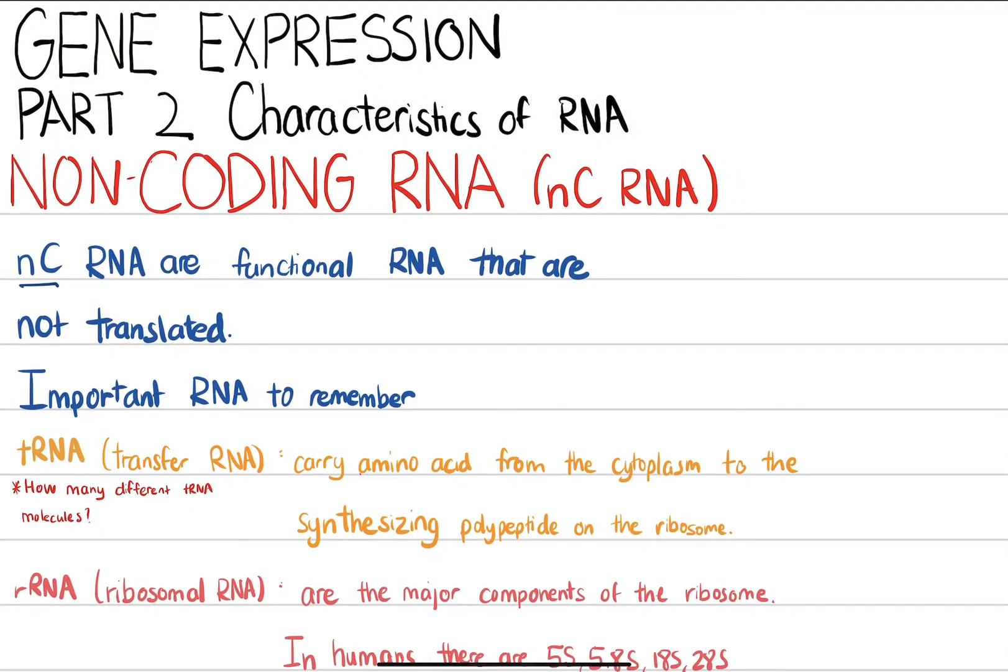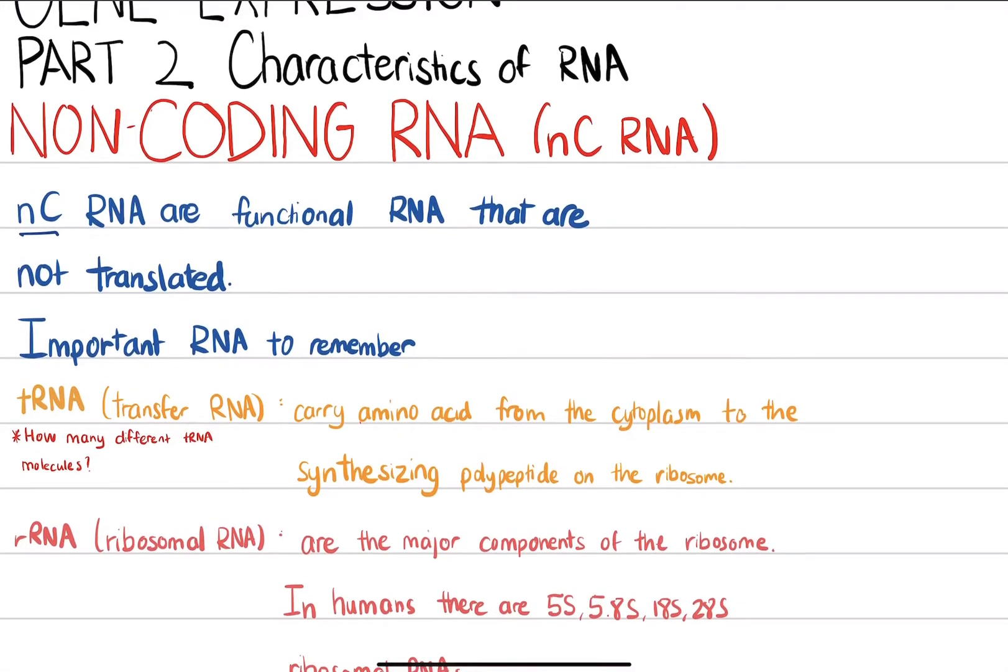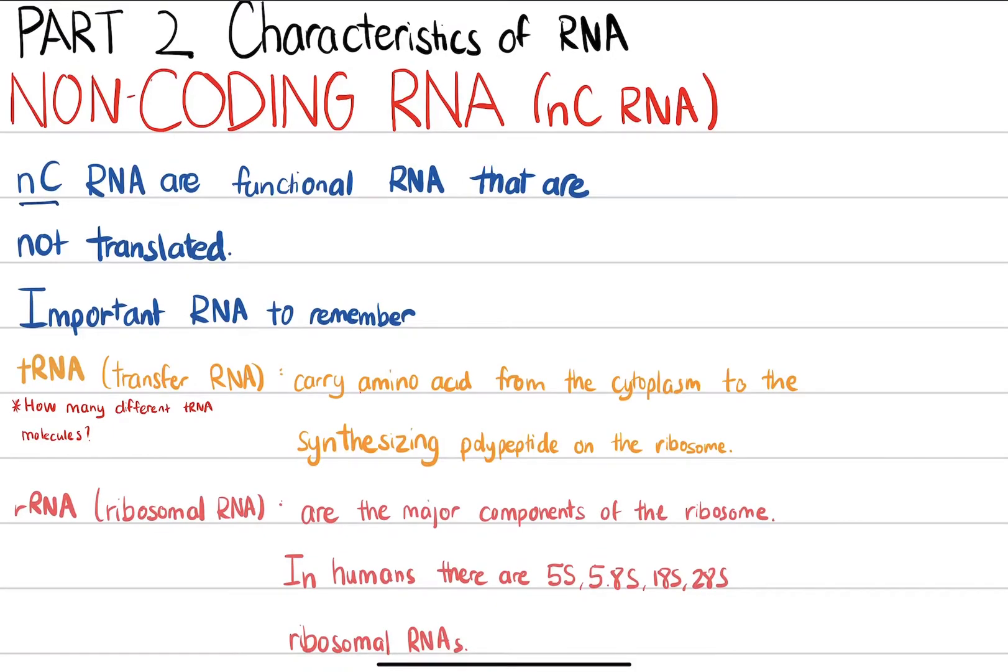Non-coding RNAs are functional RNA that are not translated. That means these RNAs are not mRNAs - they're not messenger RNAs. They're different kinds of RNAs, and they have their own important roles. Here are important non-coding RNAs.